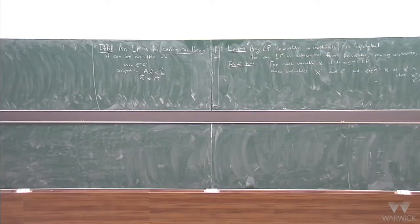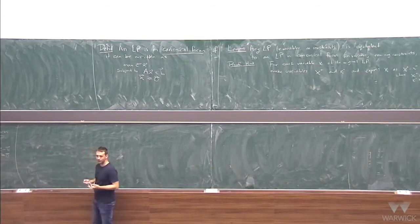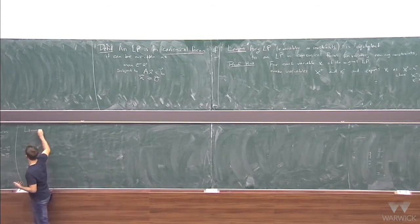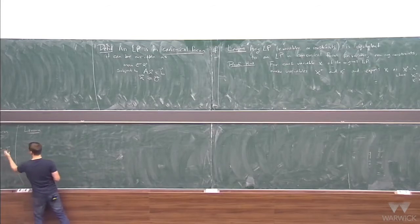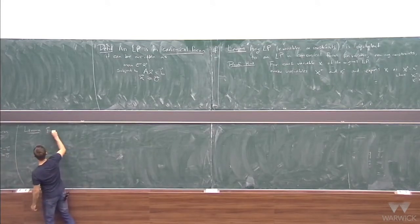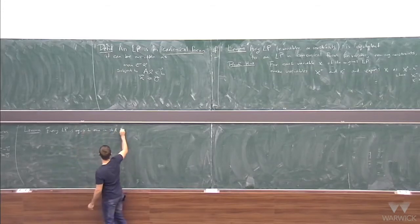The definition is kind of the same as before. An LP is in standard form if it looks like this: maximize, the same thing as before, subject to an equality constraint and a non-negativity constraint. So it seems kind of weird — what I claim is that every linear program is equivalent to one which is actually in standard form. So you can always have equality constraints here.